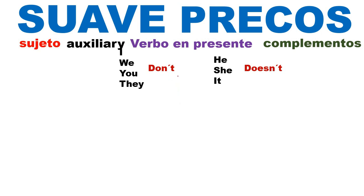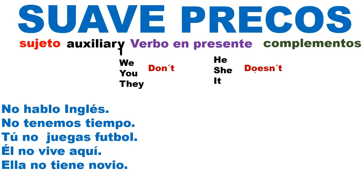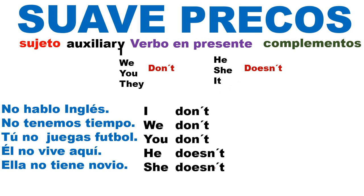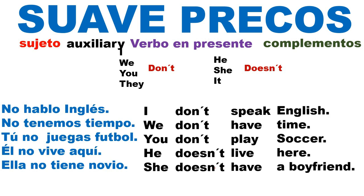The auxiliary with 'not,' when contracted, is 'don't' and 'doesn't.' Let's start with the following examples. How do you translate these sentences? In Spanish, they start with the word 'no.' However, in English, we follow this technique. First, we identify which is the subject of these sentences. Then the mnemonic technique tells us to use an auxiliary verb — either 'don't' or 'doesn't' — respecting the subjects. After that comes the verb in present, and finally the complements.